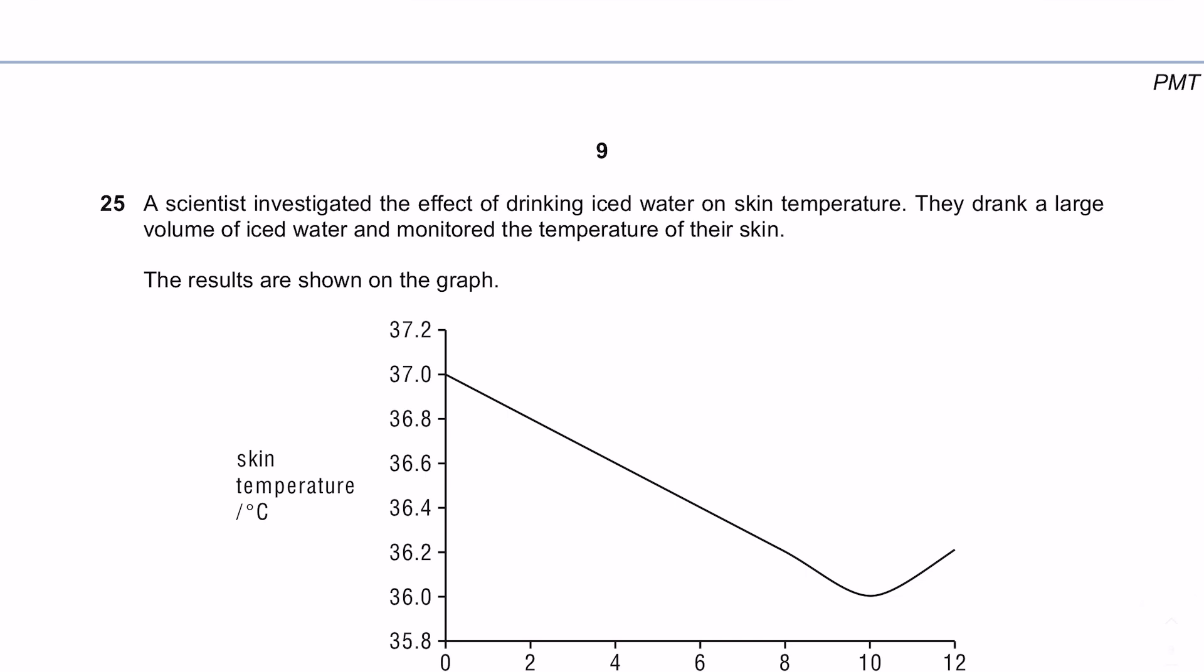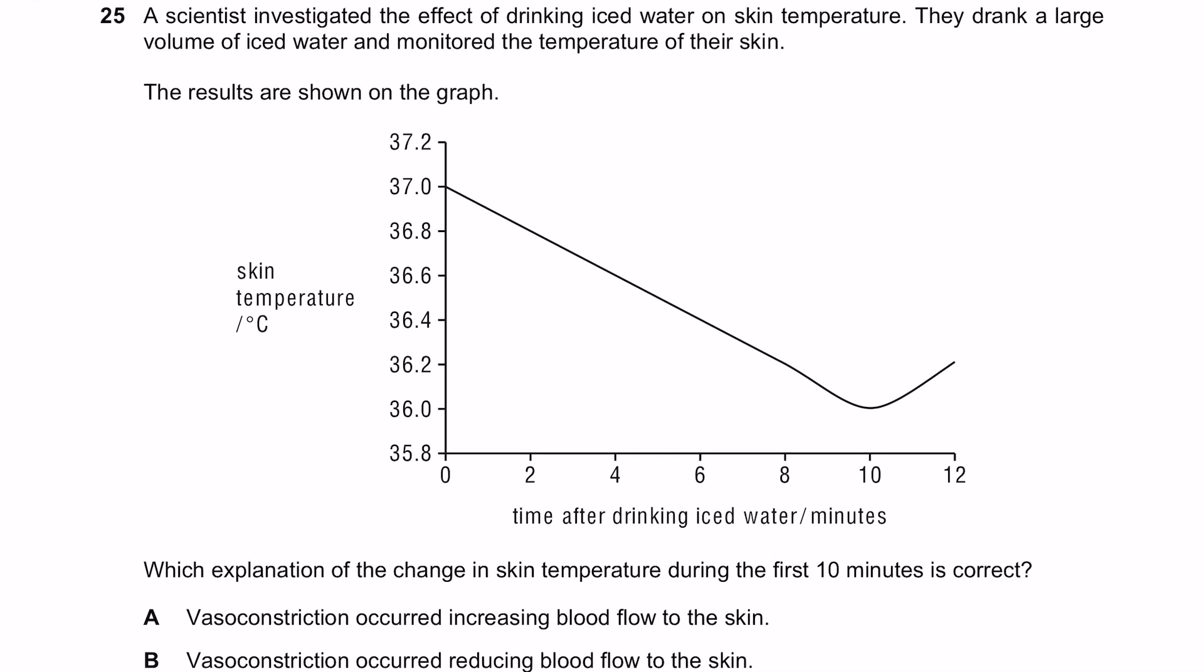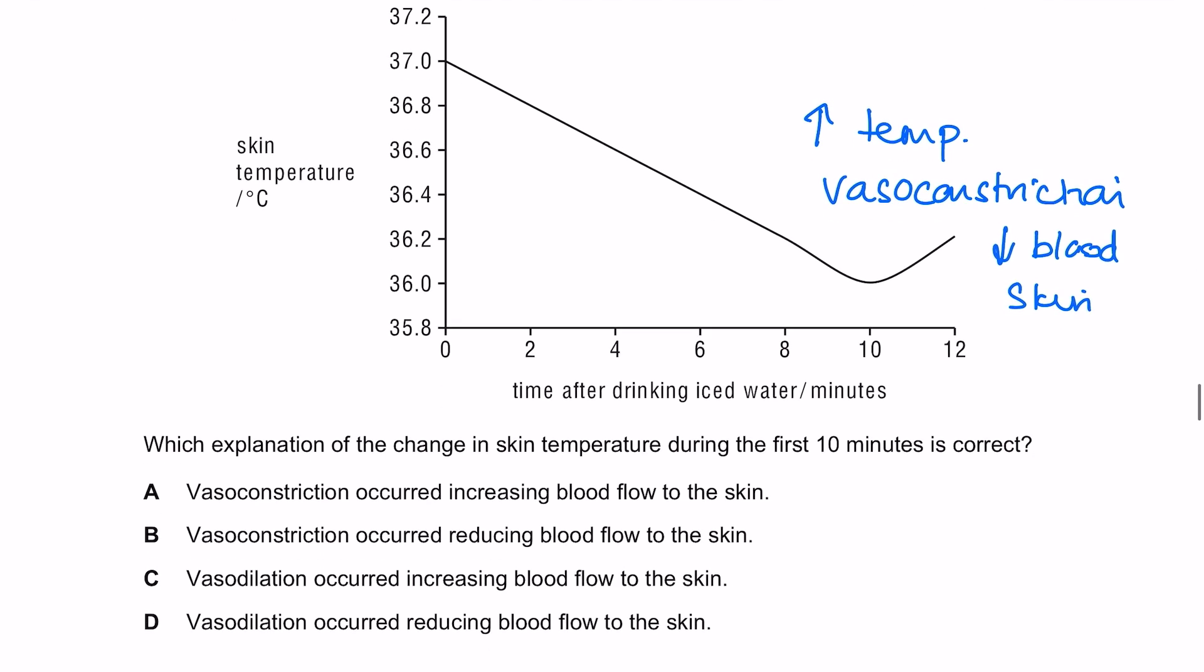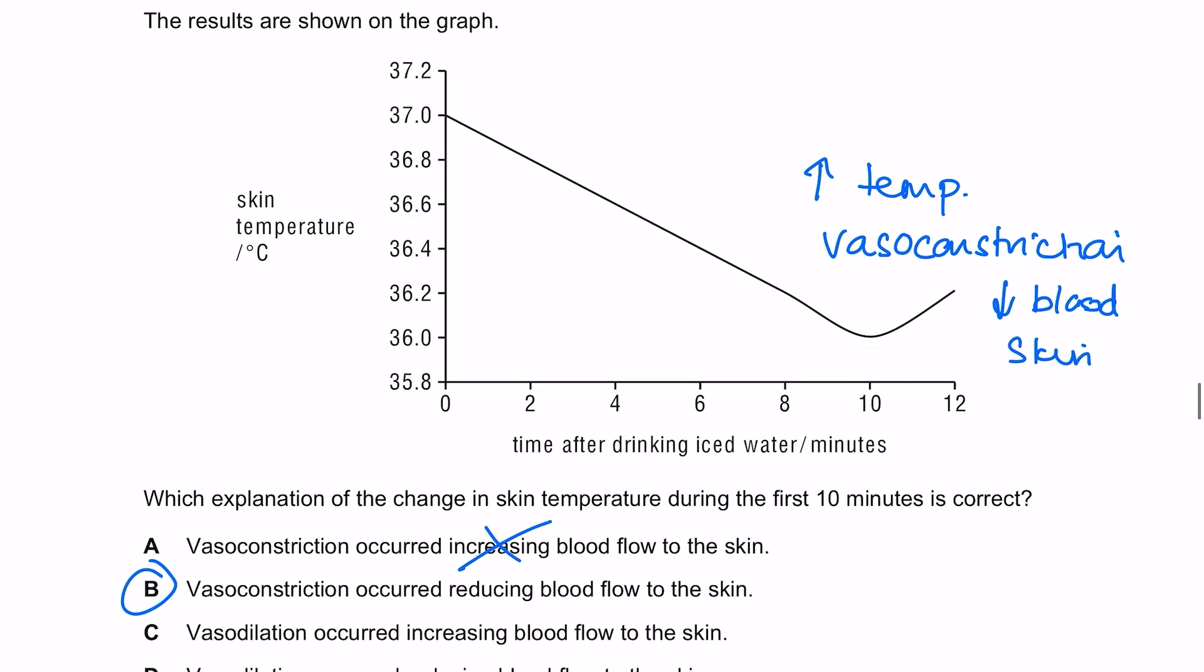A scientist investigated the effect of drinking iced water on skin temperature. They drank a large volume of iced water and monitored the temperature of their skin. Which explanation of the change in skin temperature during the first 10 minutes is correct? If they drank iced water they want to increase their temperature, so they'll do that by doing vasoconstriction which decreases blood flow to skin because those vessels are narrower. Vasoconstriction occurred reducing blood flow to the skin. The answer here is B.